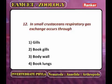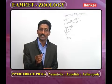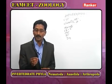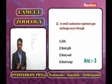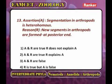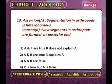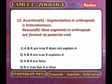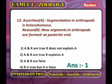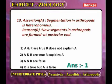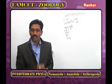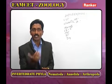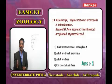In small crustaceans, respiratory gas exchange occurs through the general body surface — the body wall. Assertion: segmentation in Arthropoda is heteronomous — head, thorax, and abdomen are dissimilar in size, shape, and function. Reason: new segments in arthropods are formed at the posterior end, which is true metamerism. Both the assertion and reason are correct, and the reason explains the assertion.